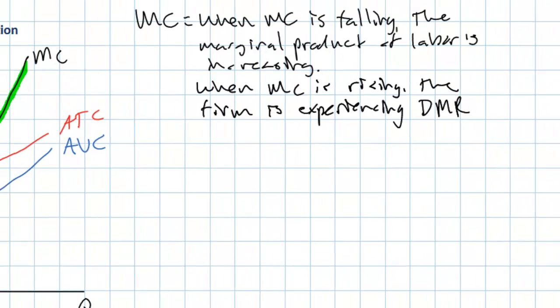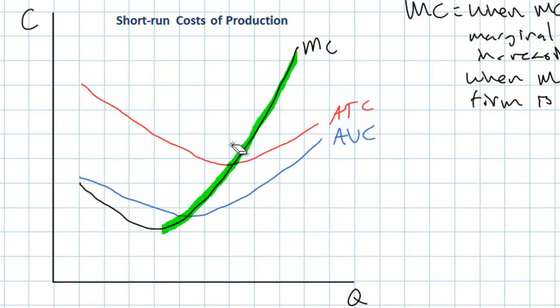So the shape of the marginal cost curve is very simple. It's simply inversely related to the productivity of labor. When productivity of additional workers increases, marginal cost decreases. When productivity begins to decrease, marginal cost increases.